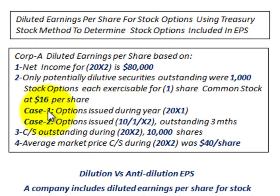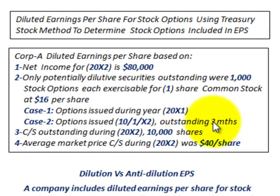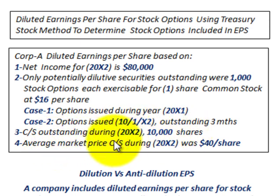We're looking at two cases. Case one: the options were issued during year 20X1, so all stock options are outstanding for the entire year 20X2. Case two: the options were issued during year 20X2 on 10/1/X2, so they're only outstanding for three months during 20X2. The average common stock outstanding during 20X2 is 10,000 shares, and the average market price of common stock during 20X2 was $40 per share.